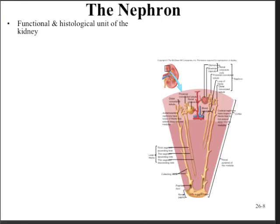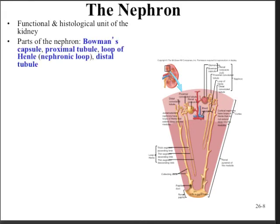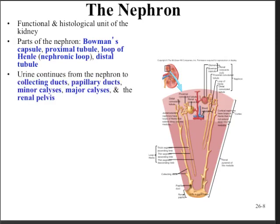The nephron is the filtration unit of the kidney. The parts include the Bowman's capsule, the proximal convoluted tubule (PCT), the loop of Henle which has a descending and an ascending limb, and then the distal convoluted tubule (DCT). These will empty into the collecting ducts. From the DCT, the urine flows into the collecting duct, from there to the papillary ducts, then to the minor calyces, the major calyces, and finally into the renal pelvis.